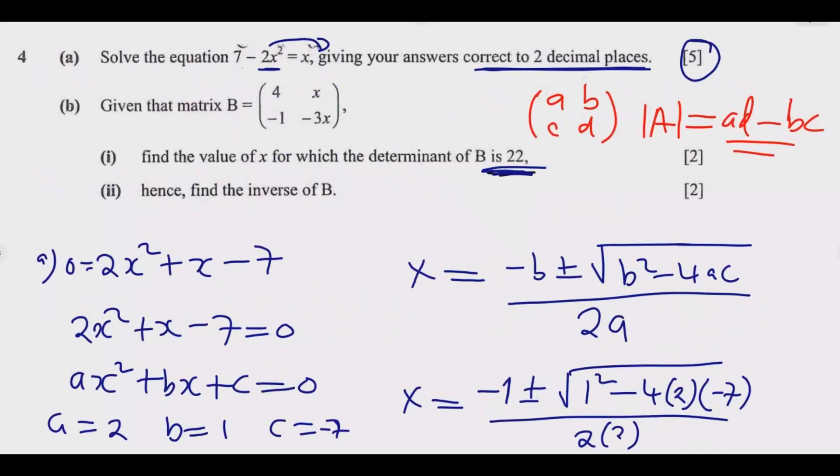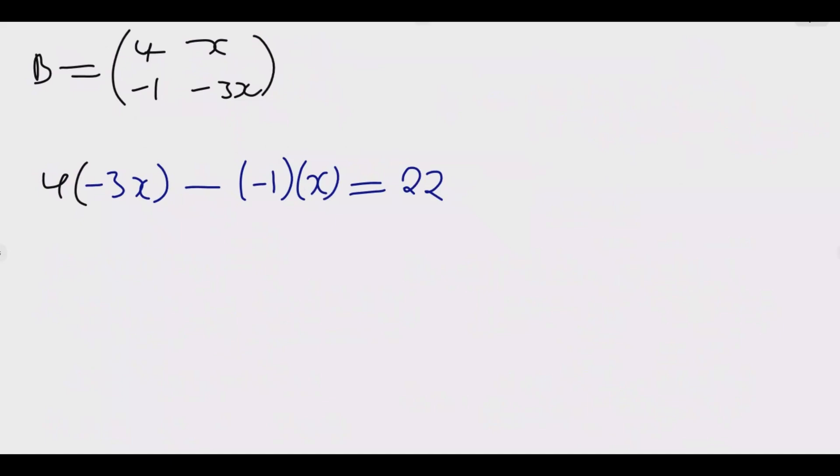It's multiplying this one by that one, then you subtract this one multiply by that. It's the same principle we're going to use. So we are going to have this matrix B which is 4, negative 1, then we have x, negative 3x. Then we find the determinant will be 4 multiply by negative 3x, then minus negative 1 times x. This answer should be 22 according to the question. 4 times negative 3x will be negative 12x.